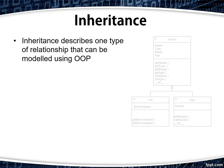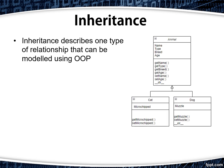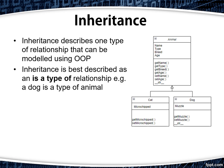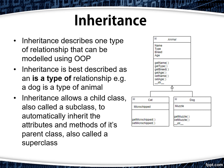Inheritance describes one type of relationship that can be modeled between different objects in an object-oriented program. Inheritance is best described as an 'is a type of' relationship — for example, a dog is a type of animal. Inheritance allows a child class, also sometimes referred to as a subclass, to automatically inherit the attributes and methods of its parent class, which is also sometimes referred to as a superclass.